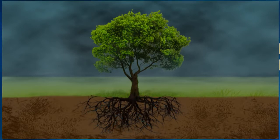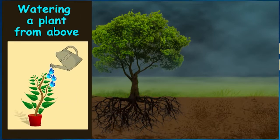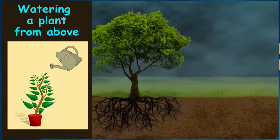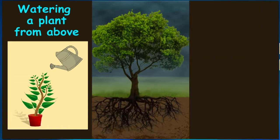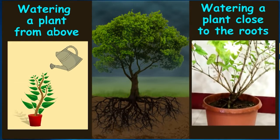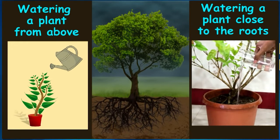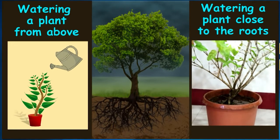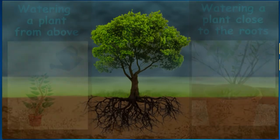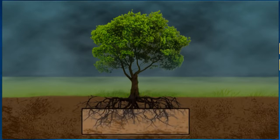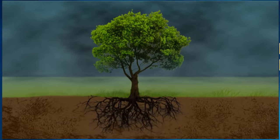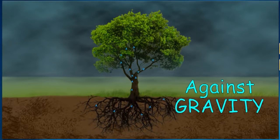Many times people water their house plants by pouring water on top of the plant. This may help in keeping the plant fresh and clean, but it doesn't fulfill the plant's need for water. So we must water the plant close to the roots — this helps in reducing water wastage. Coming back to the main question: how does the water absorbed by the roots in the lowermost portion of the plant get transported to all the parts, and that too against gravity?